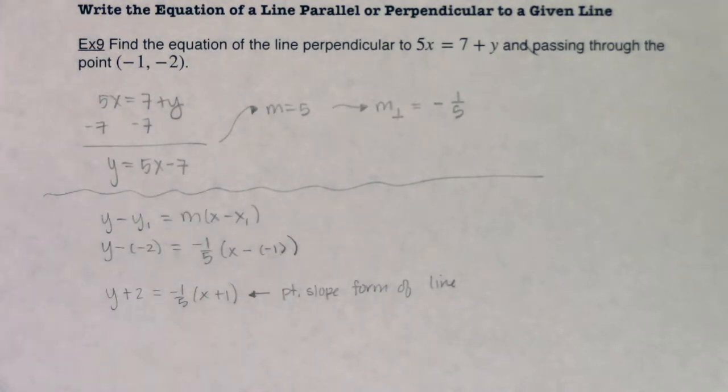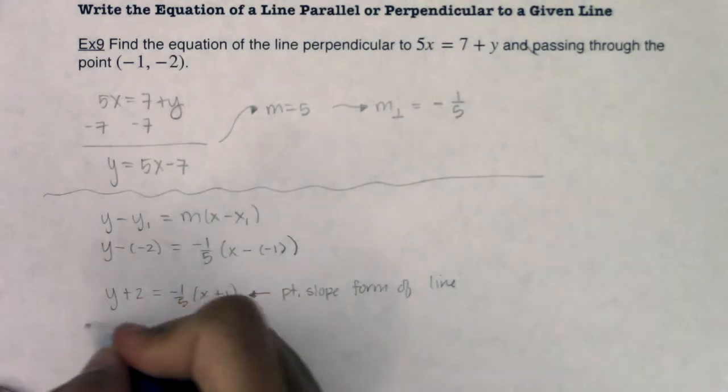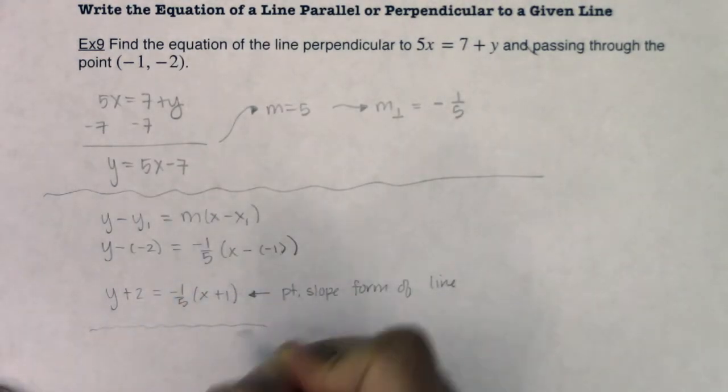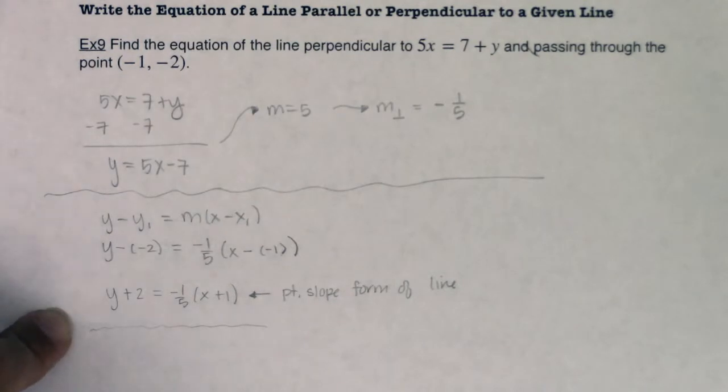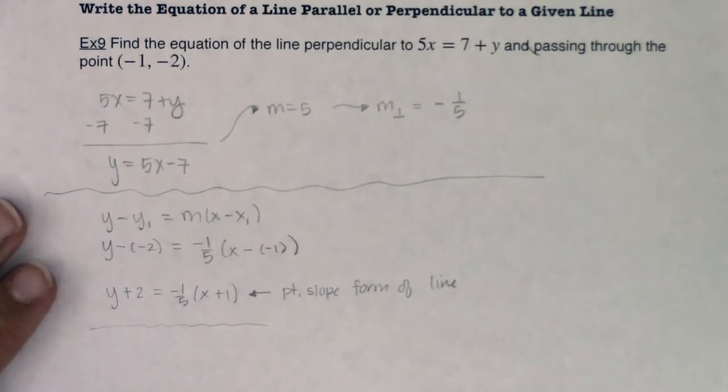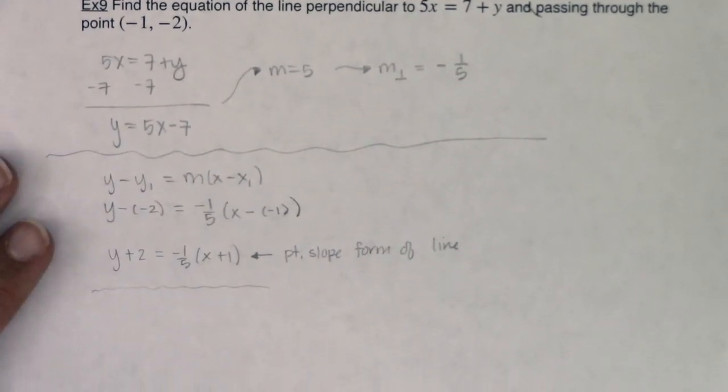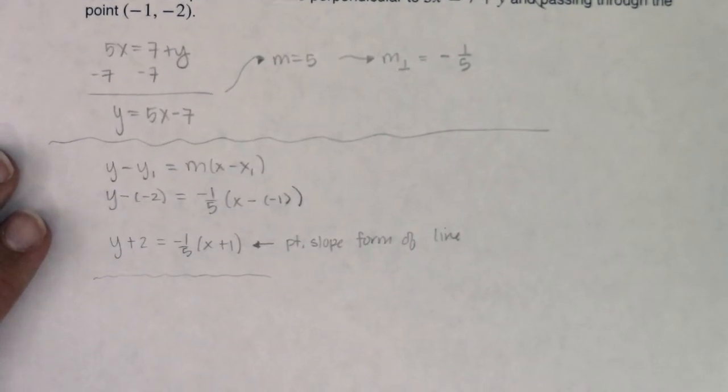I think most folks really prefer the slope intercept form of a line. So let's just go further if we want. So I'm just going to put a little space here that you could have stopped. But some of you might want to keep on going. So let me, again, scooch this up so we have it all within view.